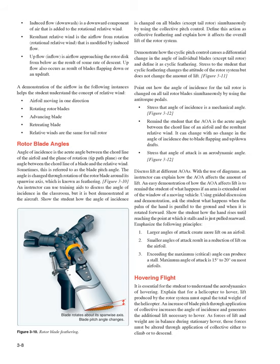An instructor can use training aids to discuss the angle of incidence in the classroom, but it is best demonstrated at the aircraft. Show the student how the angle of incidence is changed on all blades simultaneously (except tail rotor) by using the collective pitch control — define this as collective feathering and explain how it affects the overall lift of the rotor system. Demonstrate how the cyclic pitch control causes a differential change in the angle of individual blades — define it as cyclic feathering. Stress that cyclic feathering changes the attitude of the rotor system but does not change the amount of lift. Point out how the angle of incidence for the tail rotor is changed on all tail rotor blades simultaneously by using the anti-torque pedals. Stress that angle of incidence is a mechanical angle.